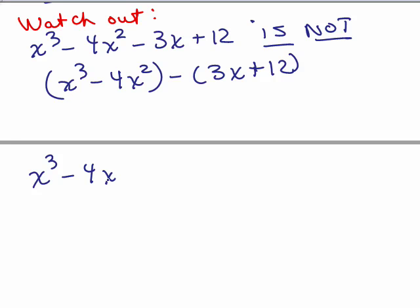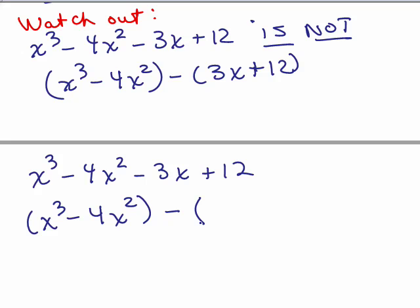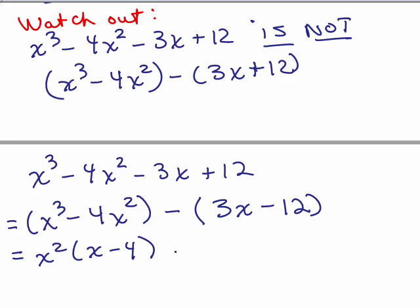One approach: group the first two together, then factor a minus sign out of both terms in the second group, so the signs change — it'll have to be 3x and minus 12. That will work. Then you would finish by factoring out a 3, because you've already taken care of that minus sign out in front, and from there it's the same as before.